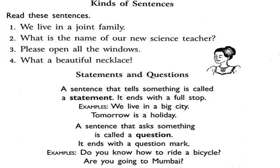The first sentence is a statement. A sentence that tells something is called a statement. 'We live in a joint family' — it's information given by this sentence, so it's a statement. It ends with a full stop. Another example of a statement may be: 'We live in a big city.' 'Tomorrow is a holiday.'